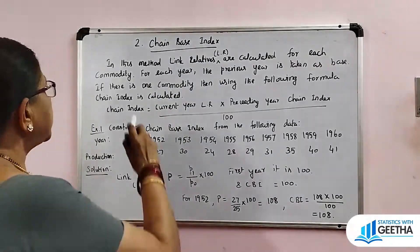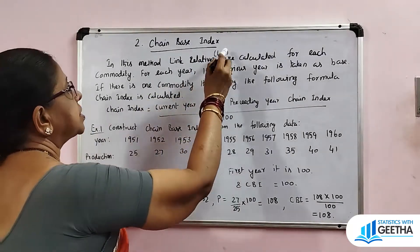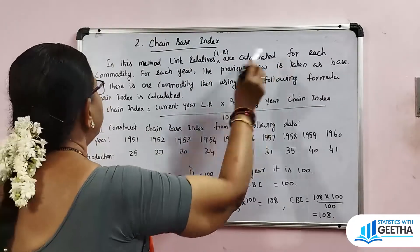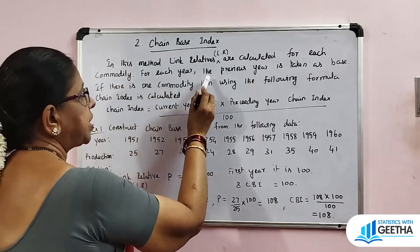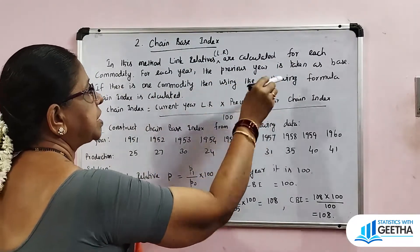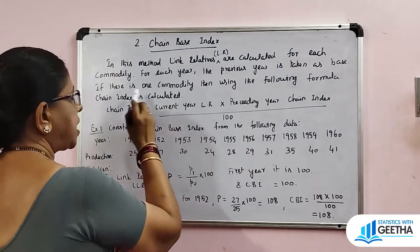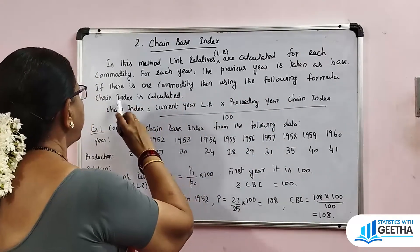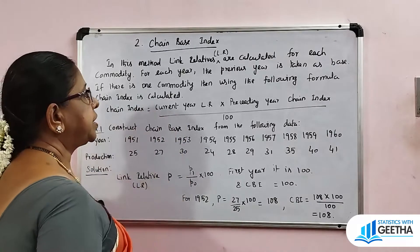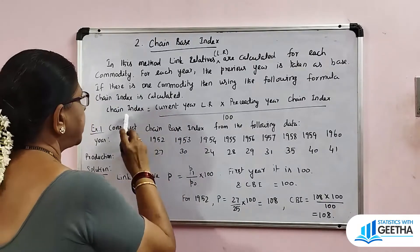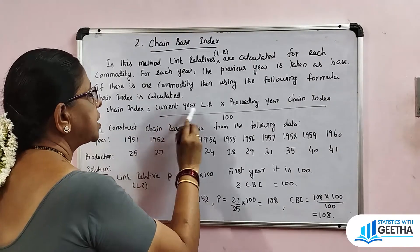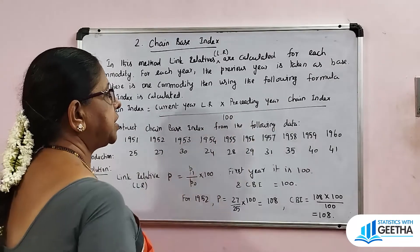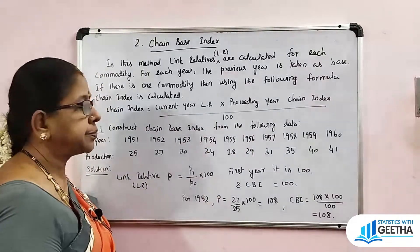In this method, link relatives are calculated for each commodity. For each year, the previous year is taken as the base. If there is one commodity, then using the following formula, the chain index is calculated. The chain index is given by: current year link relative multiplied by the preceding year chain index, whole divided by 100.